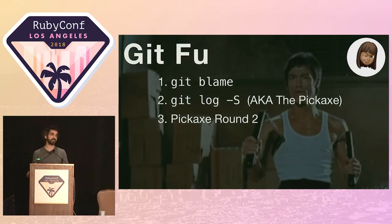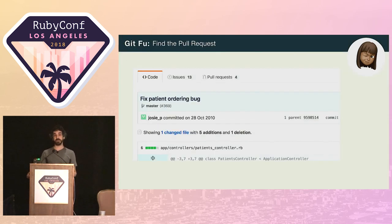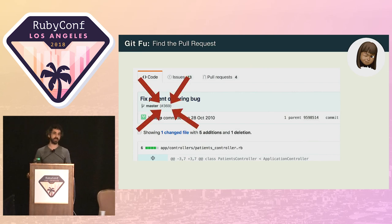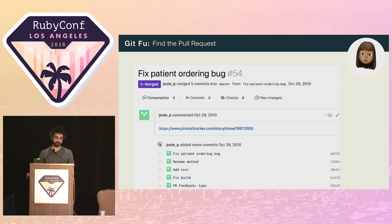Seema decides it's time to switch tack and goes looking for the original pull request for the change. She finds the commit on GitHub and clicks the link that will take her to the PR for the commit.